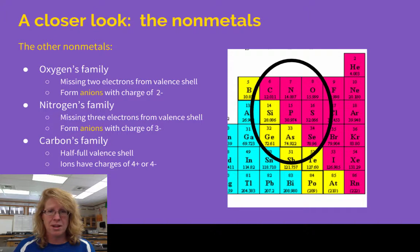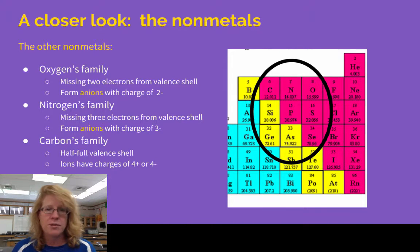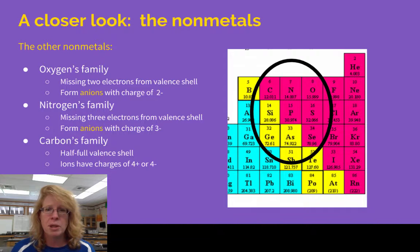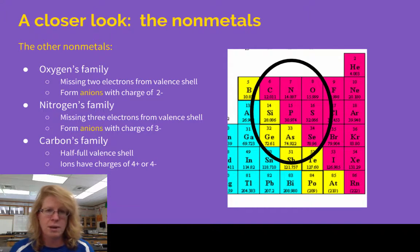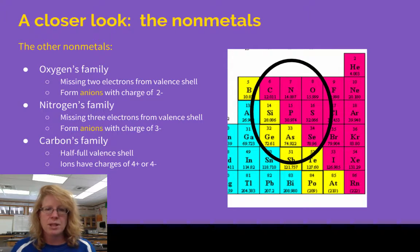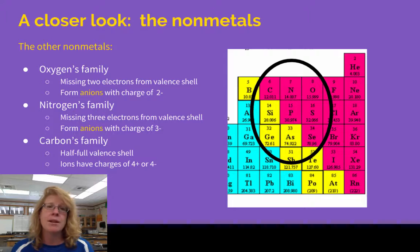The next sets of non-metals — we usually call them by the name of the top element: oxygen's family, nitrogen's family, carbon's family. Oxygen tends to have two missing electrons, nitrogen has three missing electrons, and carbon has four missing electrons, so there's a pattern as you go across. Oxygen's family is reactive, but not quite as reactive as the halogens. All of these form anions by gaining those last electrons to fill up that last valence shell.